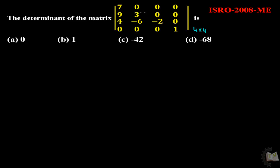In the first row, there are 4 elements out of 4, 3 are 0. So it is simple to calculate the determinant.